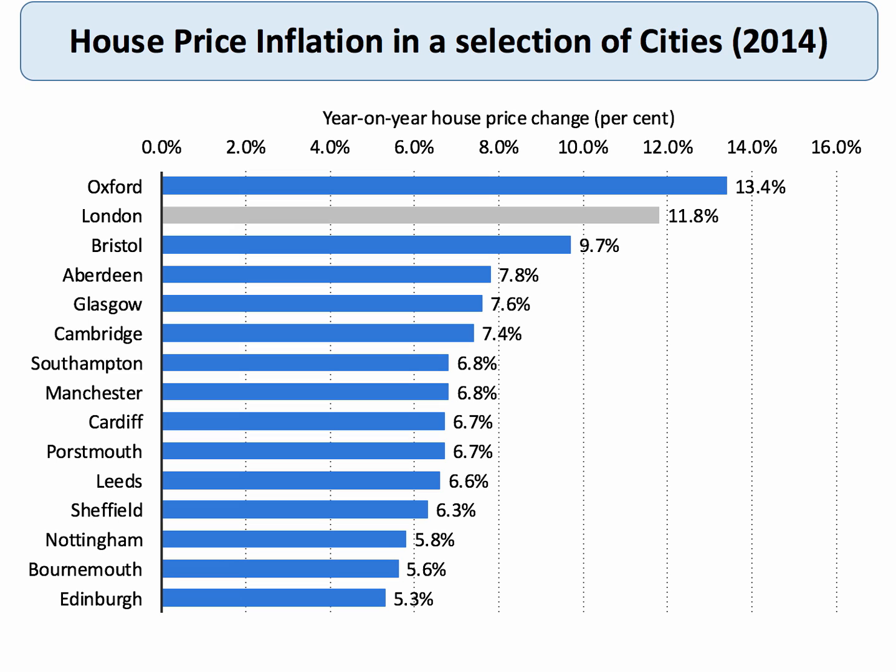Here's a chart showing the year on year house price inflation in a number of cities in the UK in 2014. Very popular cities such as Oxford and Bristol have seen very strong increases in prices, along with London of course. London affected in particular by an inflow of foreign money into the property market. Aberdeen has grown strongly until recently, partly linked to the expansion of the northern oil and gas industry. Many towns and cities in the UK have seen quite strong house price inflation.